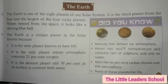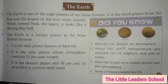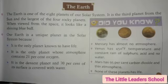The Earth — पृथ्वी के बारे में पढ़ेंगे. The Earth is one of the eight planets of our solar system. It is the third planet from the sun and the largest of the four rocky planets. When viewed from space, it looks like a shining blue ball.